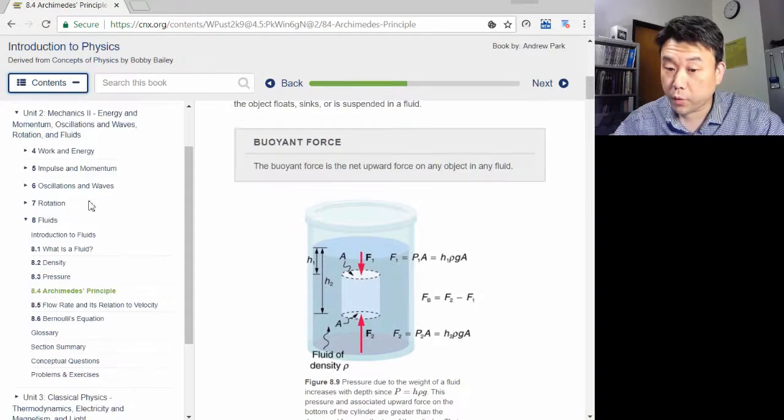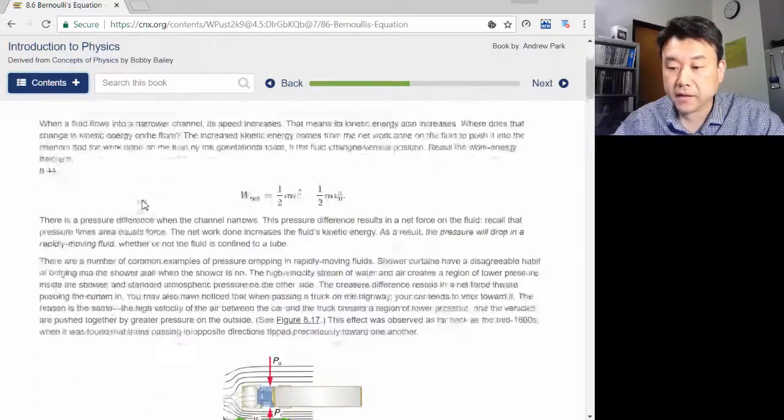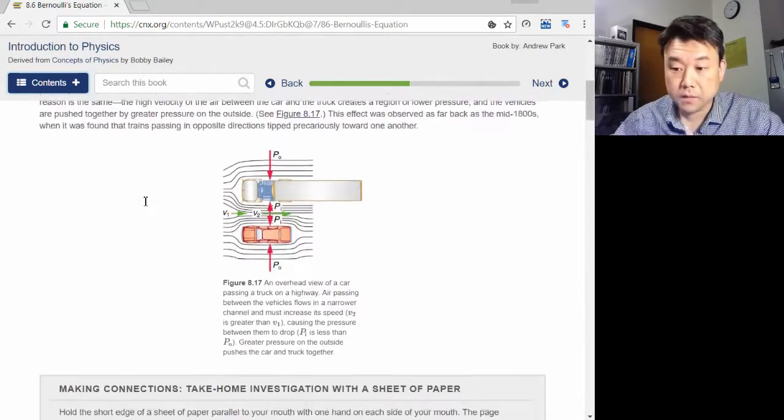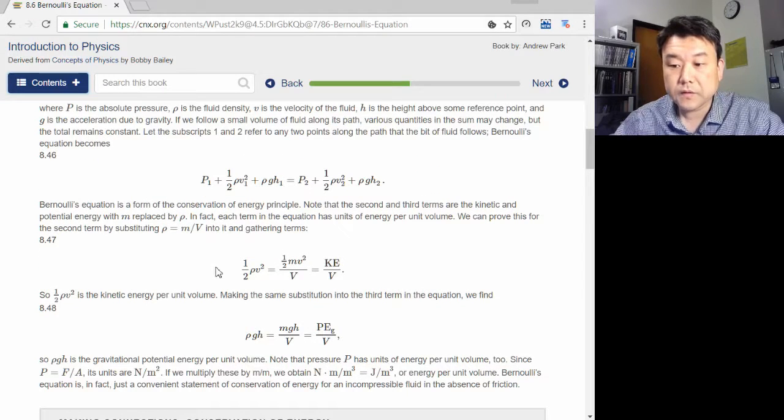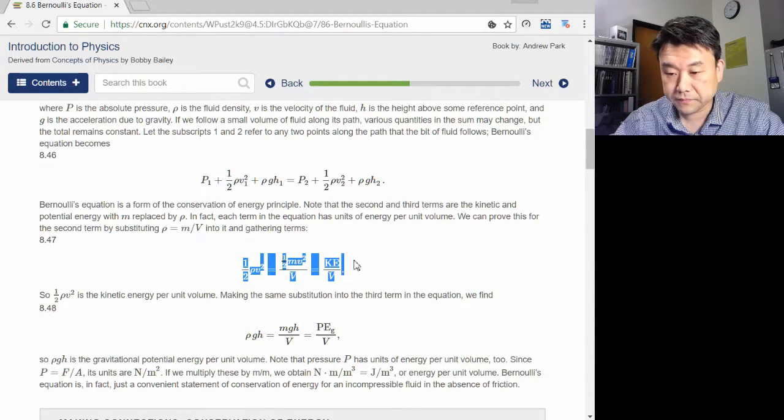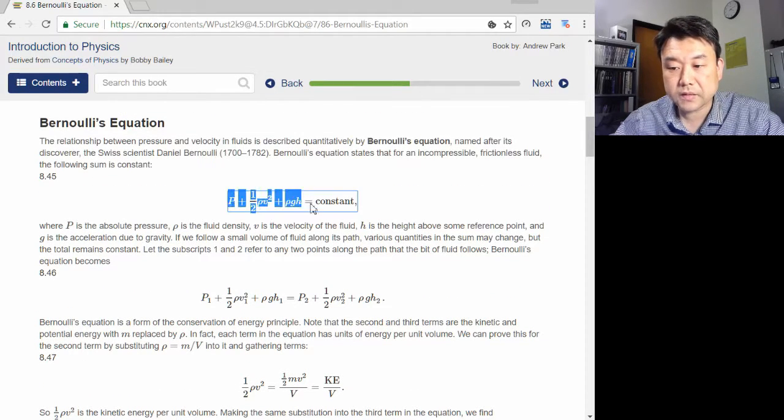so there is a net pressure difference which results in a net force. The Bernoulli equation, what it's really saying is that the total mechanical energy of fluid per volume of fluid is conserved. The kinetic energy and potential energy added together,